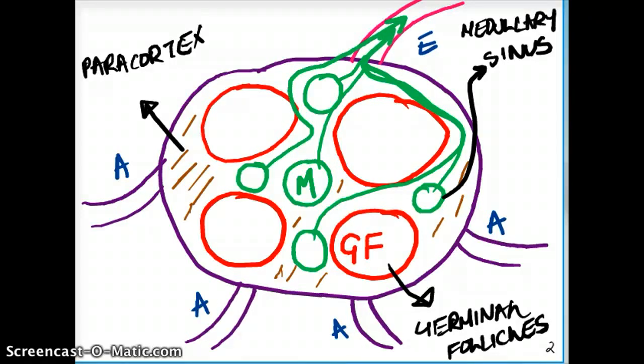So when you have lack of B and T cells, which cells are really going to proliferate? Because you don't have B cells. You don't have T cells. So what will compensate that whole process? Histiocytes. Now histiocytes, where can we find histiocytes?